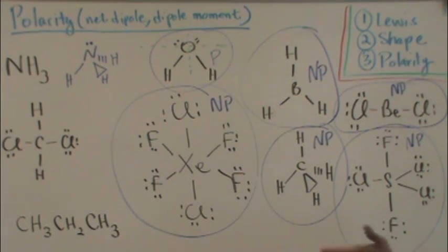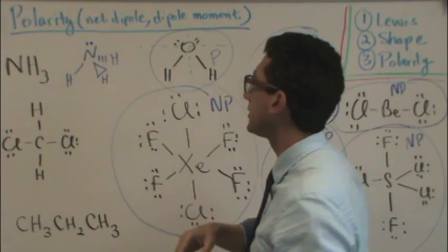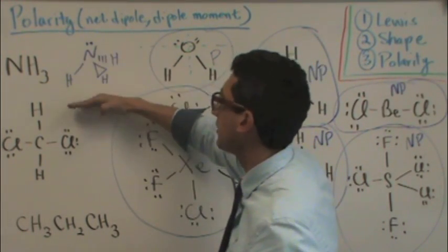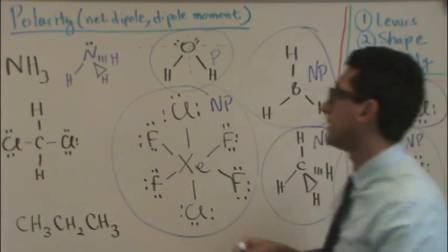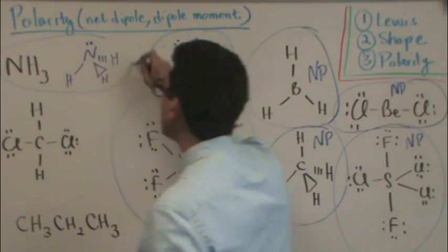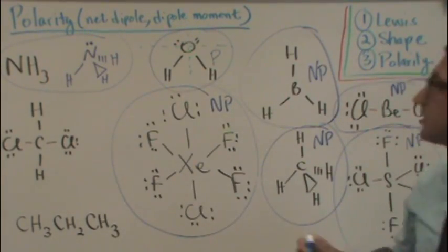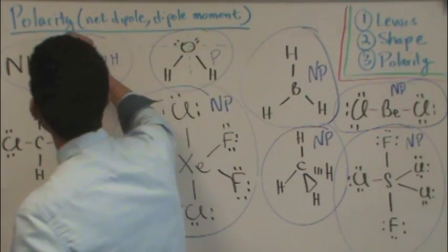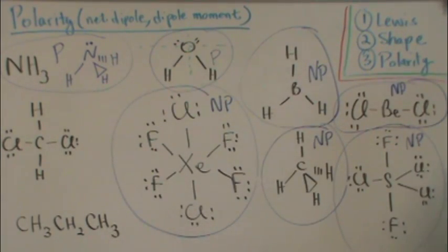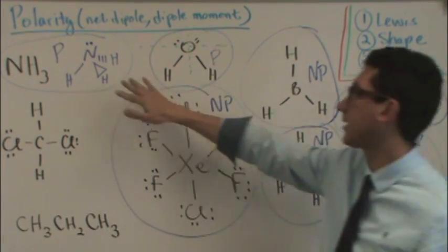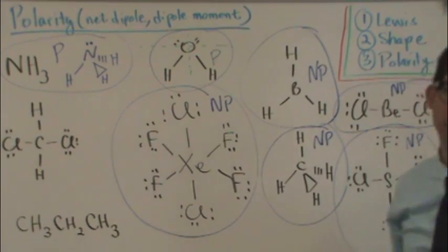Notice this. You might think, hey, this looks pretty symmetric, kind of like the water did. But notice there's hydrogens on the bottom, but not symmetrically opposed on the top. In that case, this molecule right here is asymmetric, now that I'm looking at its shape. And thus I'll put a big P for polar. It's asymmetrically distributed with hydrogens on the bottom and a lone pair on the top.